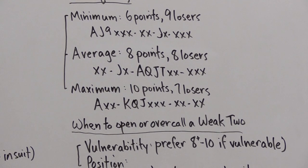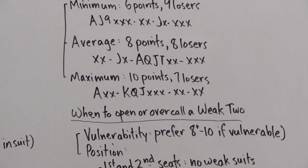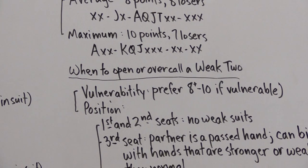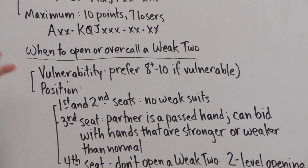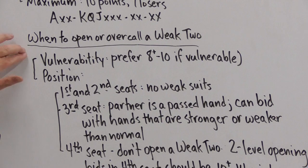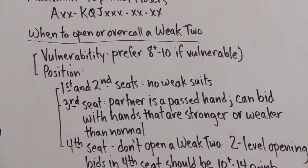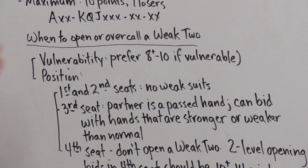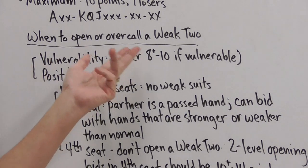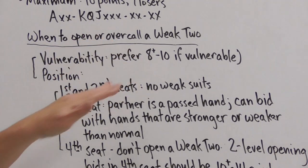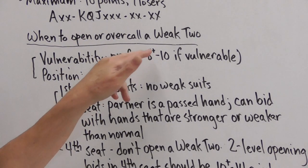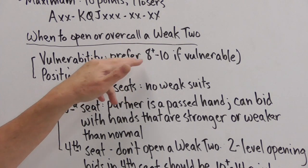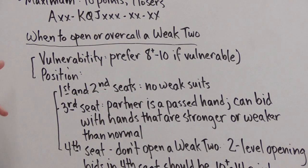Now when do we come in and make a weak two opening bid or overcall? Two factors that will be considered are going to be the vulnerability and the position. When we're vulnerable we prefer to be in the high end of our six to ten range, and this little plus line up here after the eight means a good eight to ten.